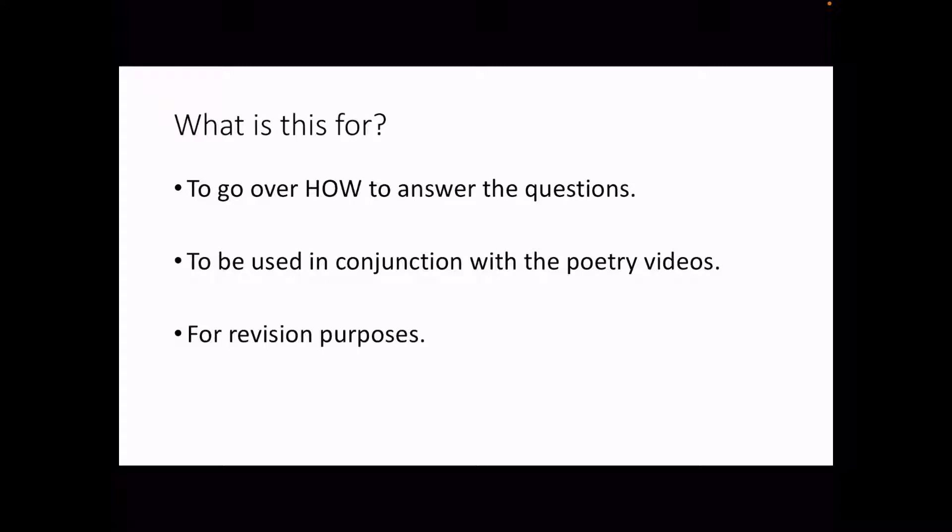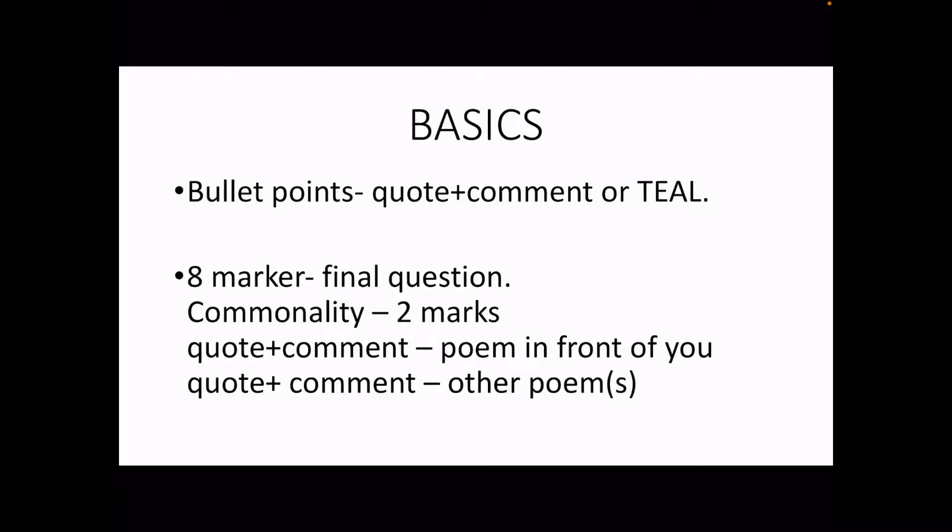The basics: we are looking for bullet points, quote and comment — or if you want to be extra safe, you can use TEAL structure to make sure you're hitting all of those analysis points and ensuring your analysis has enough depth. Typically we'd be looking for just quotation and commenting — giving a quote and then commenting on it. The 8 marker is the final question and the one that makes people jittery. For that you need to give two marks of commonality, quote and comment from the poem in front of you, and then quote and comment on other poems.